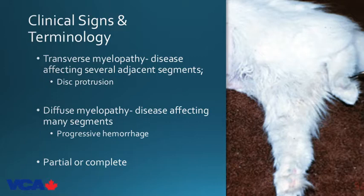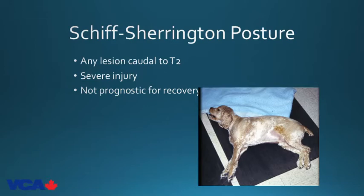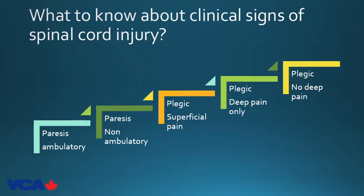Myelopathy is spinal cord disease. Transverse means a few segments affected versus diffuse which means a larger segment. The difference could be disc protrusion versus hemorrhage. Partial means deep pain is still present; complete means no deep pain. Complete transverse myelopathy at T3-L3 means no deep pain between those segments — that's bad news. Schiff-Sherrington phenomenon: any lesion caudal to T2 can cause loss of inhibition to thoracic limbs, producing over-extension when the dog lies on its side. Pelvic limb position varies and is not a prognostic indicator — it simply means there's a lesion caudal to T2. Differentiate from decerebrate rigidity by confirming normal mentation and ability to walk on thoracic limbs when propped up.